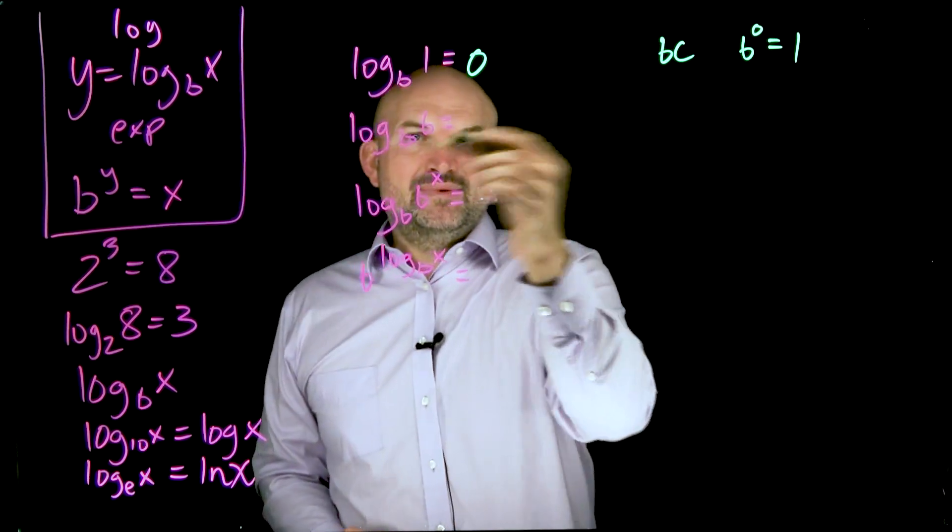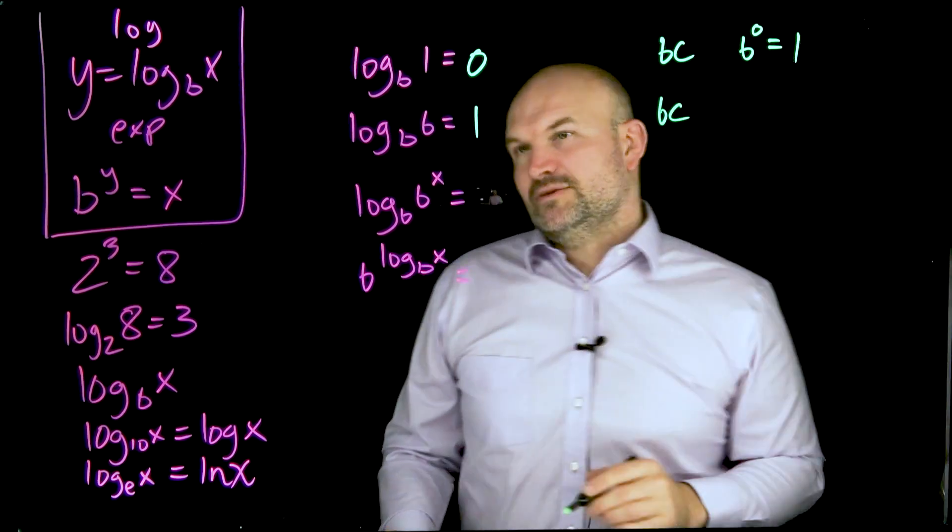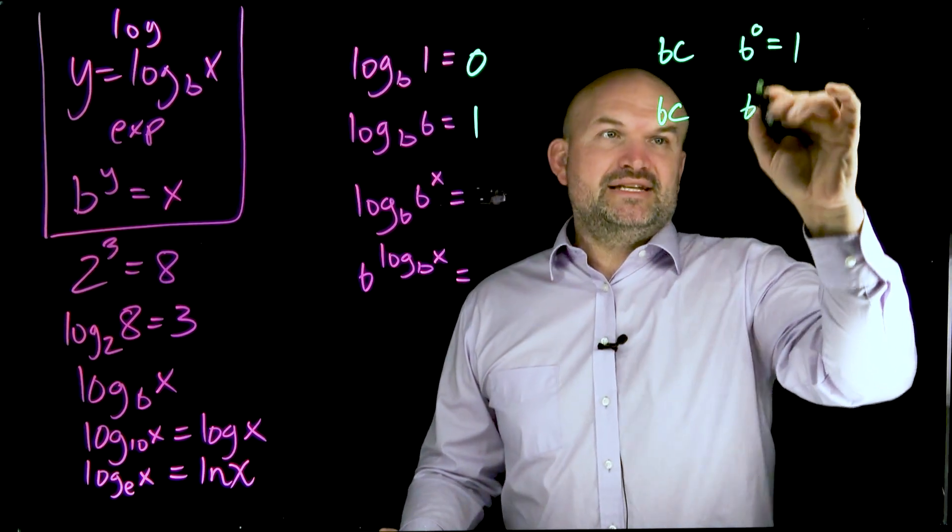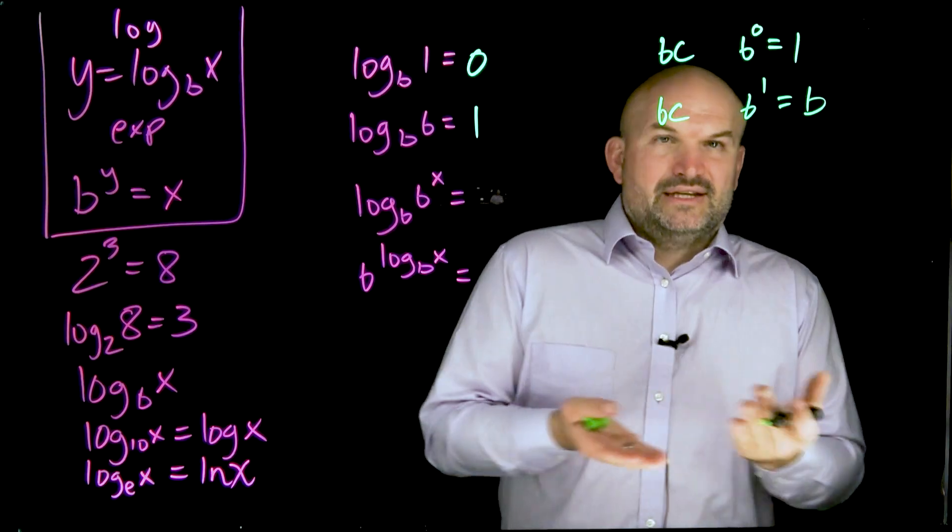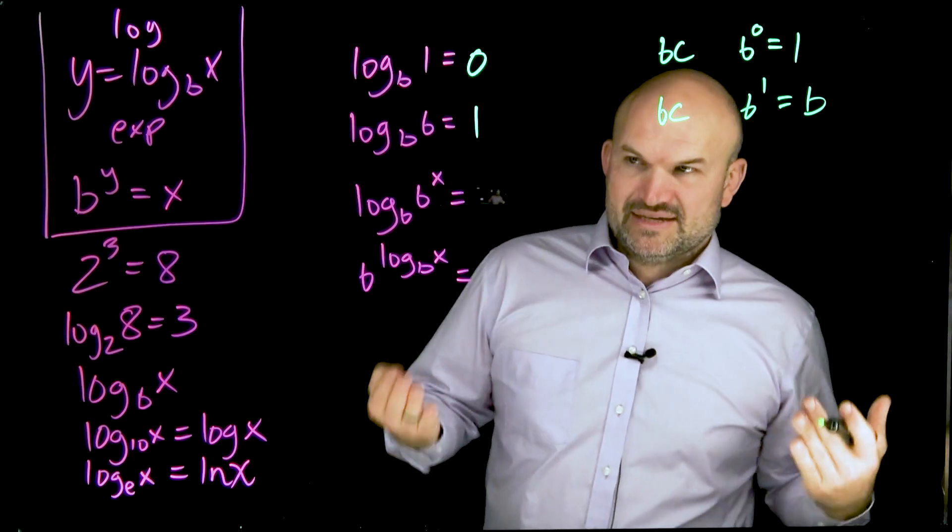So the next one is, we can understand this rather easily as well. That's going to equal 1 because if I look at this in exponential form, b to the first power has to equal b, right? And yeah, b raised to the first power is just going to equal b.